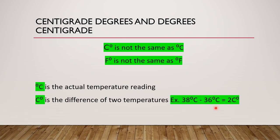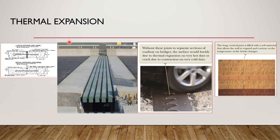In the older textbooks, the tables for coefficients of thermal expansion use units of per centigrade degrees, not degrees centigrade. But in newer books by modern authors, they use degrees centigrade to remove the confusion around centigrade degrees.